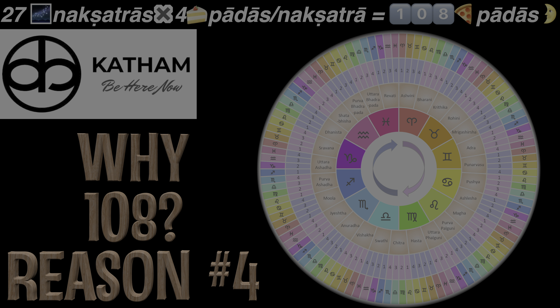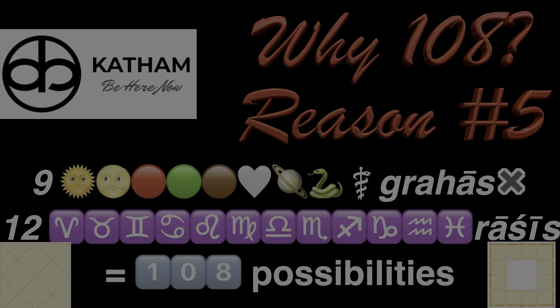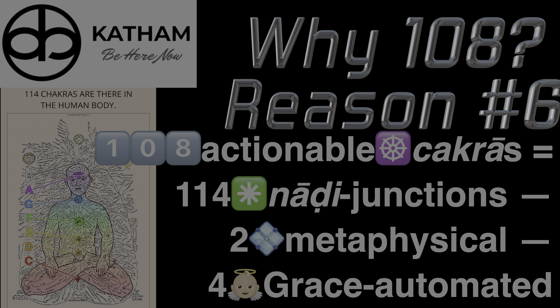Now for reason number 1 — why 108? The sun ought to stack itself 108 times to reach the earth. Reason number 2: 108 earths fit one sun diameter. Reason number 3: The moon ought to stack itself 108 times to reach the earth.